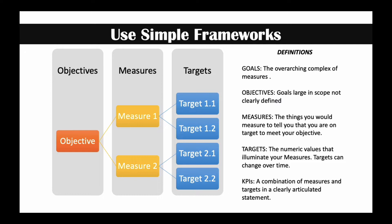The measures — or we could call these key results. So if you use an OKR framework, objectives are the O and key results is the KR part. These are the things that you would measure that would tell you you're on target to meet your objective. We can have a series of measures, or key results.